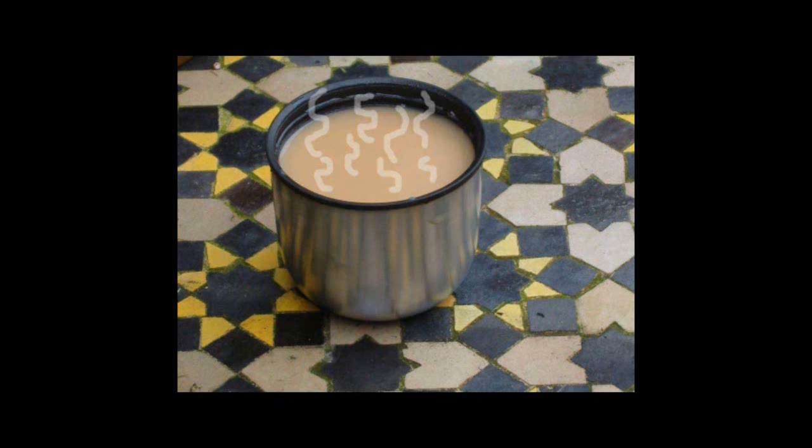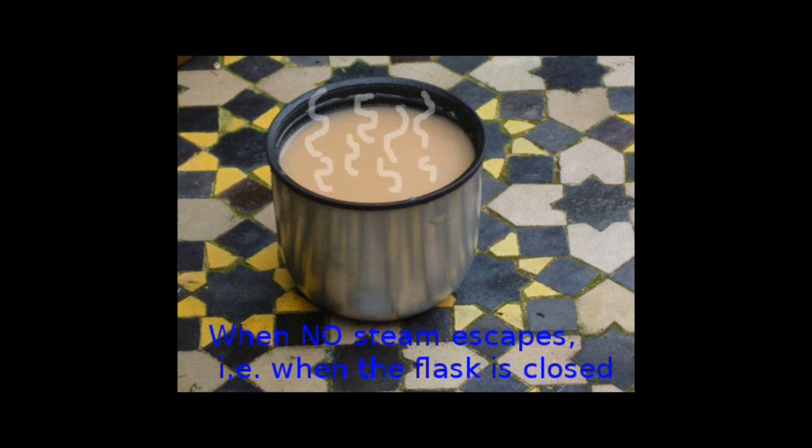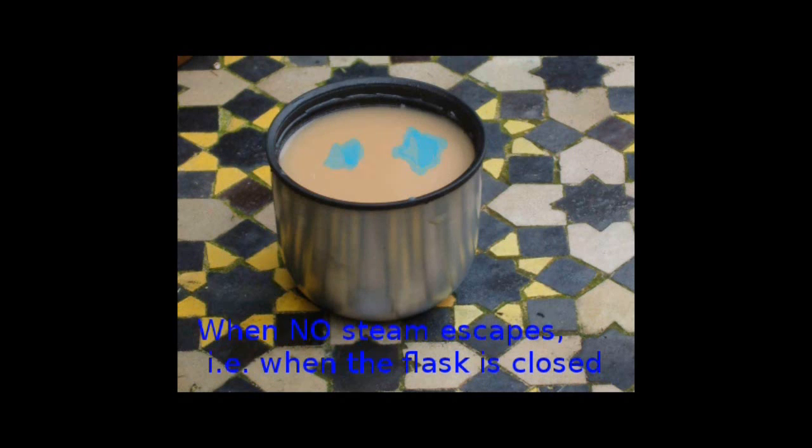From our daily lives we experience systems going to equilibrium states all the time. A flask of tea cooling down until it's the same temperature as the room it's in, a cold drink on a hot summer's day warming up. Both of these are systems going towards their equilibrium values. In these examples the macroscopic system is a flask whereas its environment is the room around it. The only thing that is transferred is heat, so long as you ignore the steam.